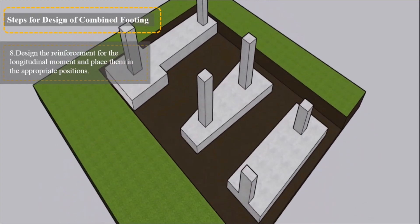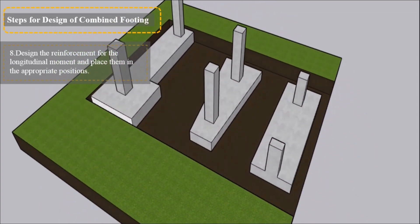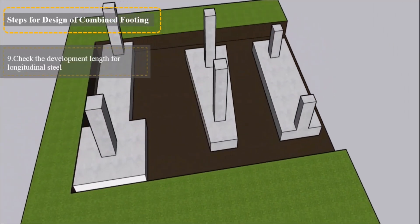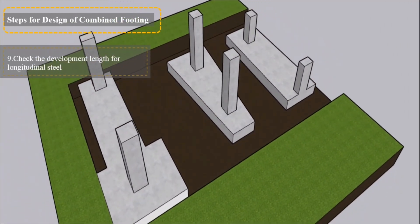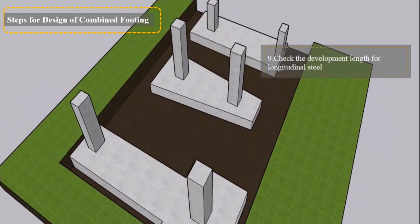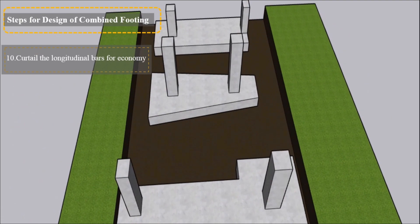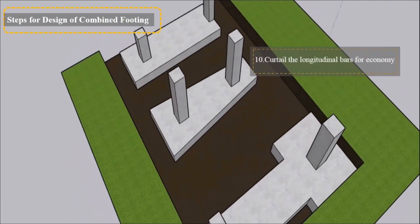8. Design the reinforcement for the longitudinal moment and place them in the appropriate positions. 9. Check the development length for longitudinal steel. 10. Curtail the longitudinal bars for economy.